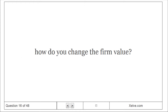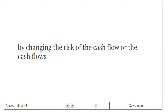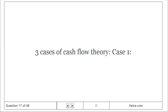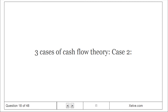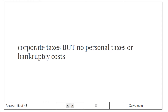How do you change the firm value? By changing the risk of the cash flows or the cash flows themselves. There are three cases of capital structure theory. Case 1: no corporate or personal taxes and no bankruptcy costs. Case 2: corporate taxes but no personal taxes or bankruptcy costs.